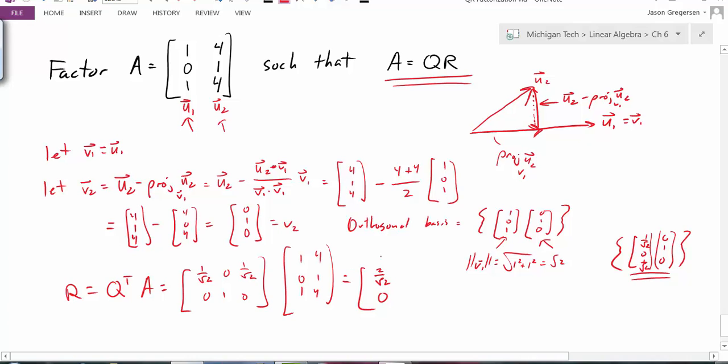Then if I go to the second column, I will take this column times this row. So I will get 4 over root 2 plus 4 over root 2. That's 8 over root 2. And then I will take that second column times the second row. And here I'll get the value of a 1.